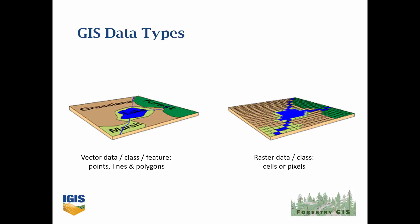There are basically two ways that we can save the locations of things on the ground. Vector data — which you might also see referred to as a vector class or vector feature — essentially stores the XY location of points. That works well when things you're interested in can be represented as points. This can also be extended to more complex shapes if you add additional points and connect the dots, forming lines or polygons.